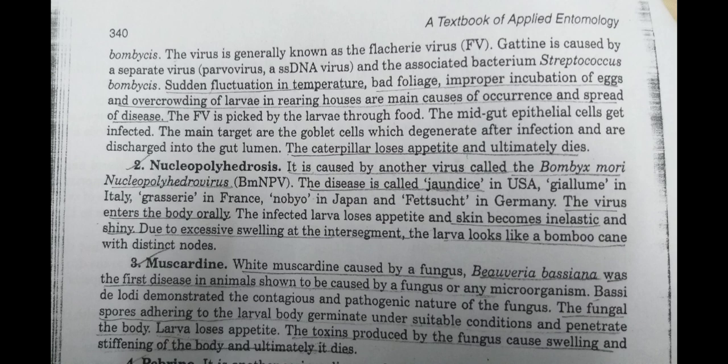The second disease is Nucleopolyhedrosis, caused by Bombyx mori Nucleopolyhedrovirus (BmNPV). This disease is also called jaundice in some regions, and is known by local names in Italy, France, Japan, and Germany. When the virus is orally ingested by the larvae, the infected larva loses appetite, the skin becomes inelastic and shiny, and due to excessive swelling in the intersegmental regions, the larva looks like a bamboo cane with distinct nodes.